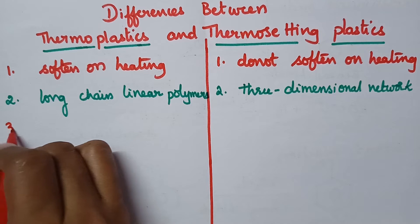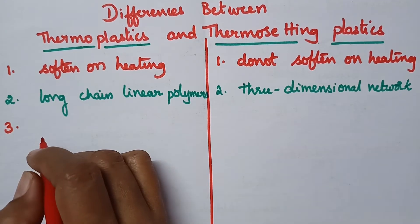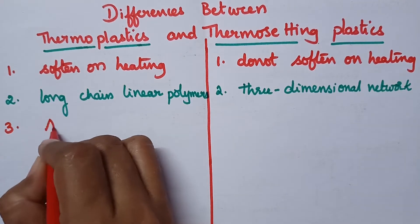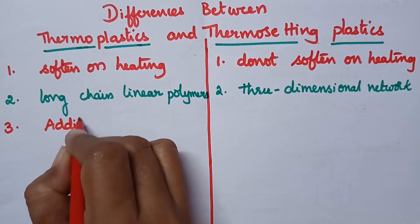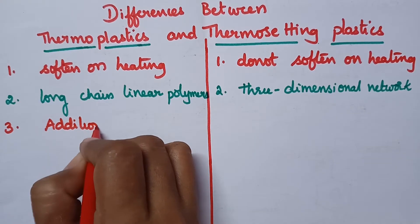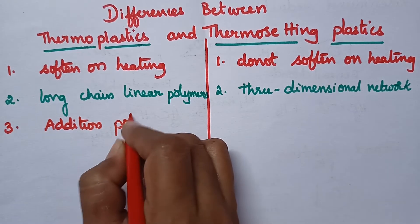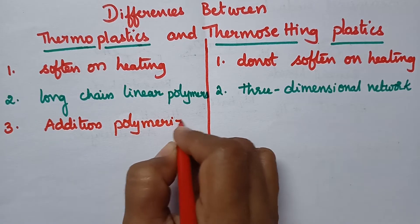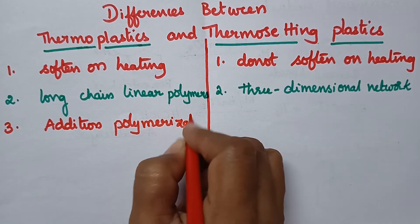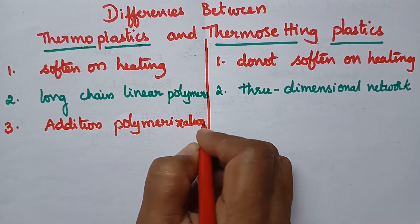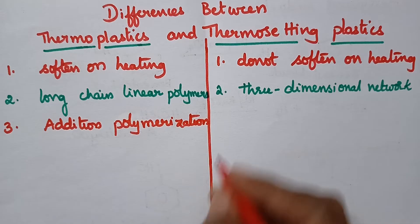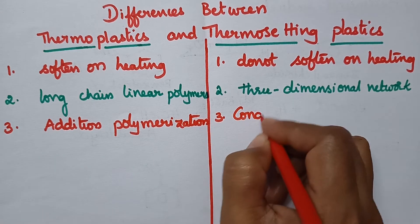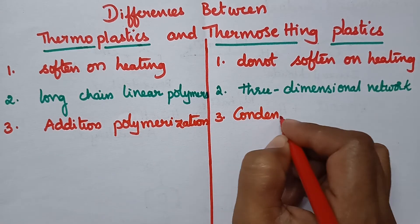In general, thermoplastics can be prepared by addition polymerization. Whereas thermosetting plastics can be prepared by condensation polymerization.